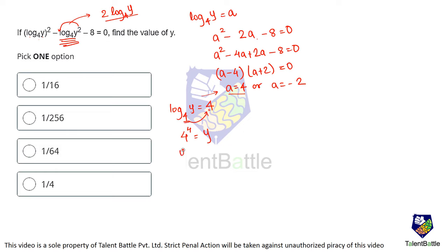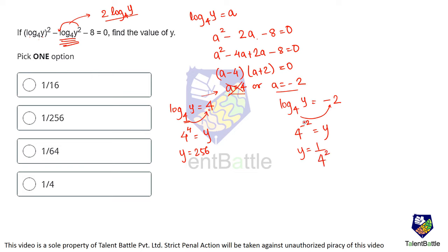Now checking a equals minus 2: log y to base 4 equals minus 2 means 4 raised to minus 2 equals y. So y equals 1 upon 4 squared, which is 1/16. That matches option A, and that is the answer.